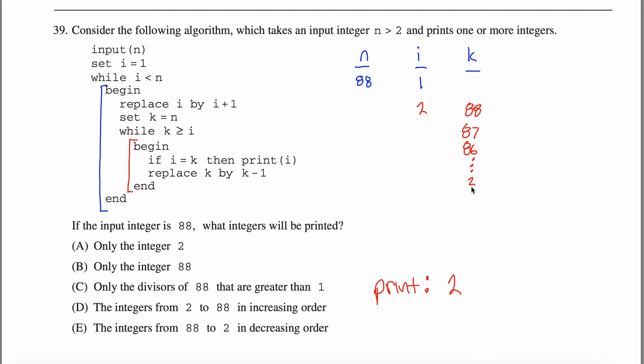So I'm following this all the way down until this is a 2. And now it says, well, k is greater than or equal to i. That's still true. So I'm still going to do this loop. If i equals k, print i. Okay, I did that. And now I'm going to replace k with k minus 1. So this will go down to a 1. And now that this is a 1, k is no longer greater than or equal to i. So now I am done with this red loop right here. And I go up to right here because i is still less than n. i is 2 and n is 88.